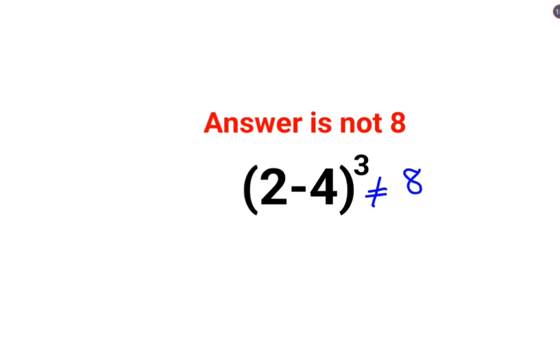We have 2 minus 4. Whenever you have a subtraction happening, you will do the subtraction normally. When you take 2 out of 4, you are just left with another 2.